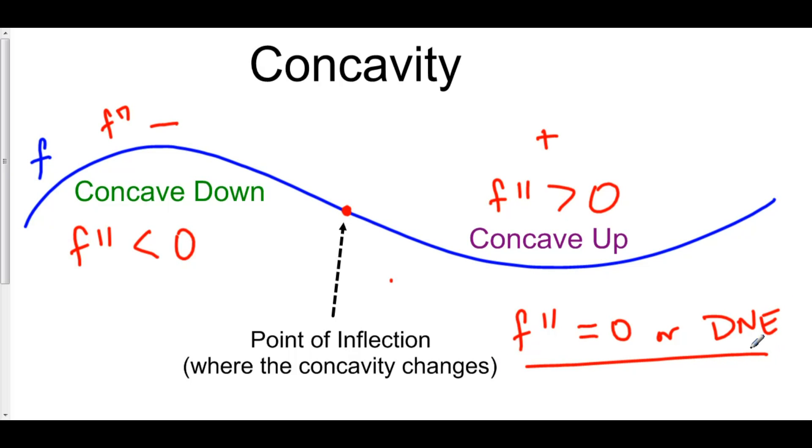So this is very similar to what we did in the first derivative, where we first looked for critical points where the first derivative either equaled zero or was not defined. And then we investigated where our first derivative was either negative or positive. Well, we'll do the exact same thing with concavity.